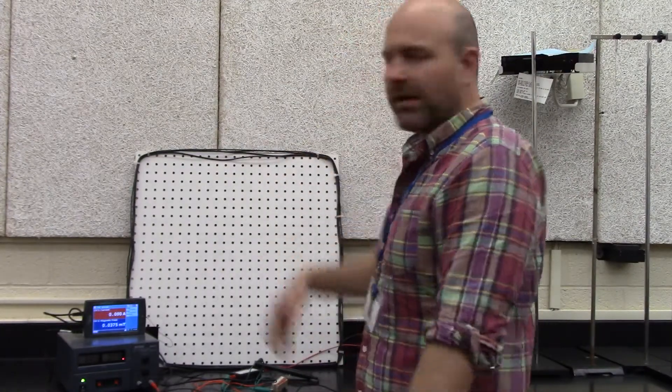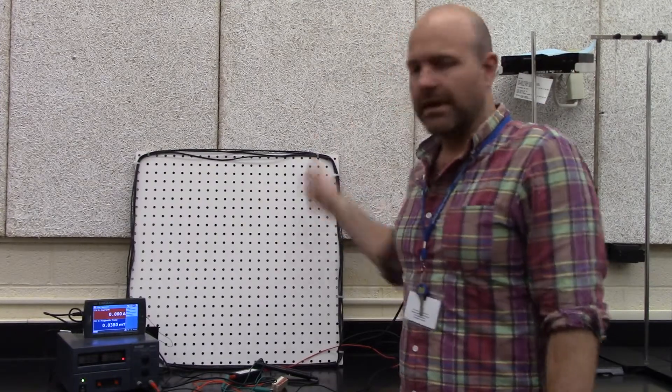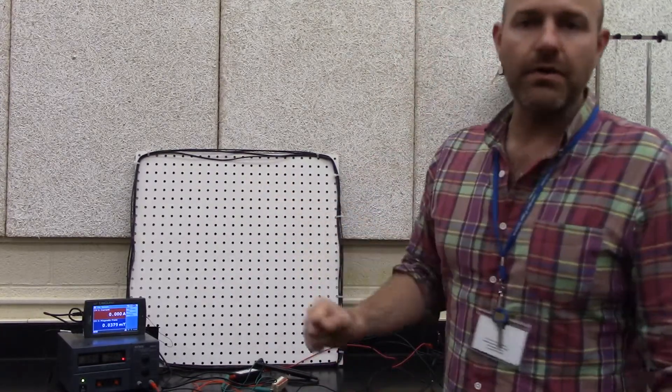I'm going to collect some data here or at least show you how the data was collected for the investigation you're going to do. There are a couple things that we say could affect the magnetic field from a current carrying wire from a long straight one. Certainly the more loops there are the more pronounced the magnetic field will be. The bigger the current is, the bigger the magnetic field, and the closer you are to the wire.